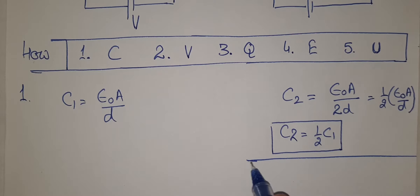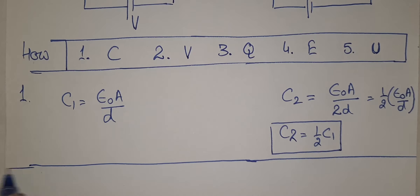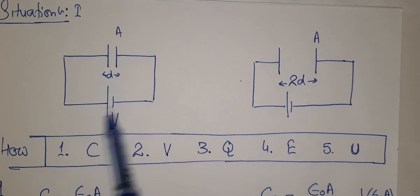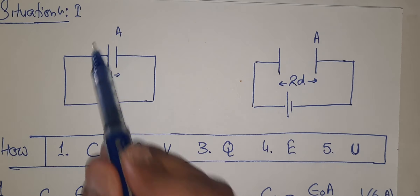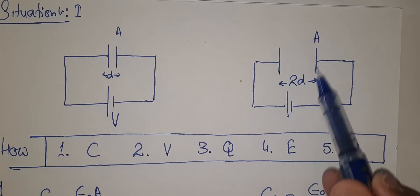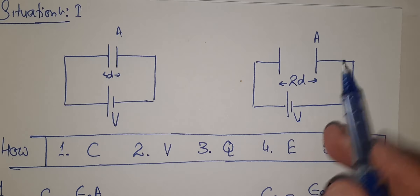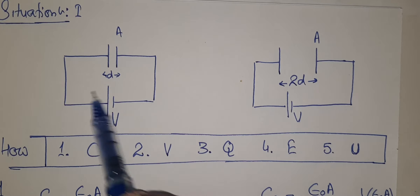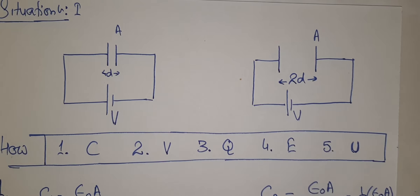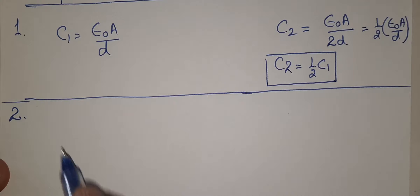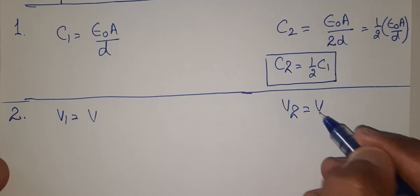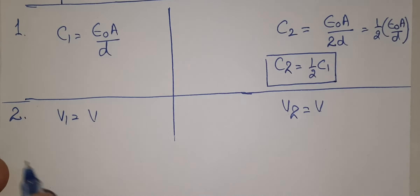Now the second part — potential difference between the plates. The battery remains connected. So whatever potential difference the battery provides across these plates, the same battery is there in both situations. Therefore potential difference V remains the same in both situations: V1 = V and V2 = V, because the battery has not been removed.